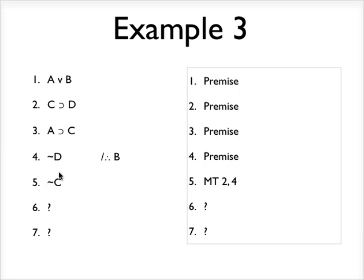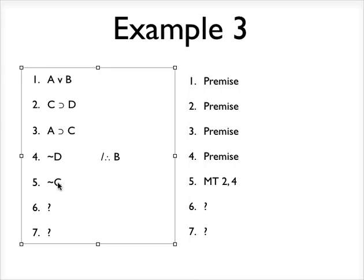All right, so now I'm going to apply that same strategy, which is I've just derived a line, not C, and so I'm going to see what I can do with that. And you should see that the third premise, line 3 here, is a conditional statement whose consequent is a C, and I've just derived not C, so you should see that I can do the same thing again.